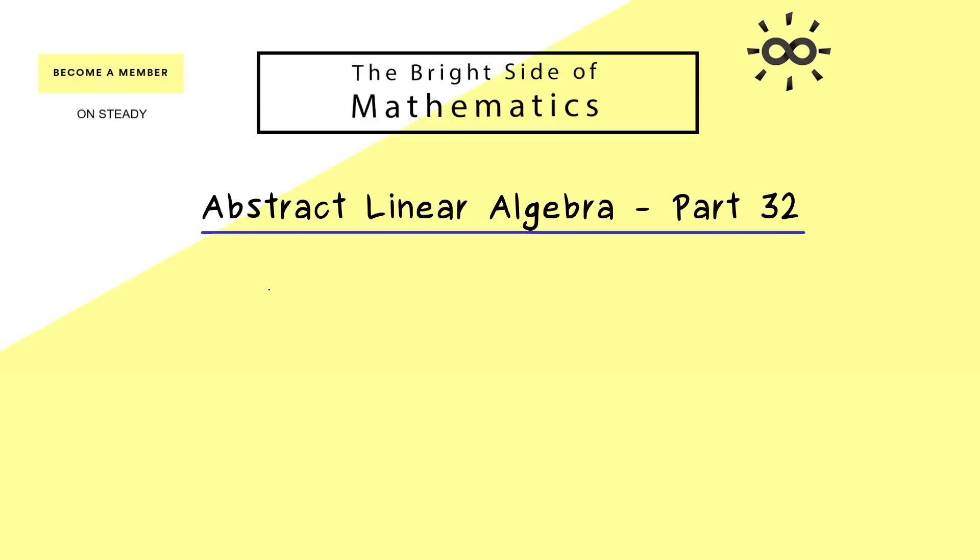Okay, then I would say let's immediately start by considering a general linear map we call L. And as always it should act between two general vector spaces V and W. And then in the case that we have finite dimensional vector spaces, you also know that the rank nullity theorem holds for L. This one tells you that the dimension of the range of L plus the dimension of the kernel of L is always equal to the dimension of the space we put in.